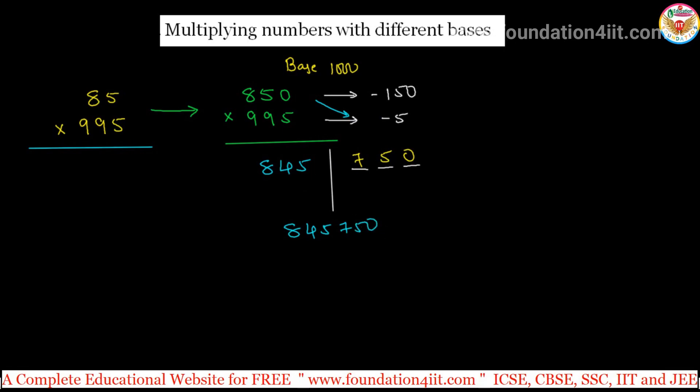But to do this, we did an extra multiplication by 10, so we should reverse now. Divide by 10, which means just cancel this 0. So the answer is 84575. Simple: however much you multiply, divide by the same number. Don't forget to do this.